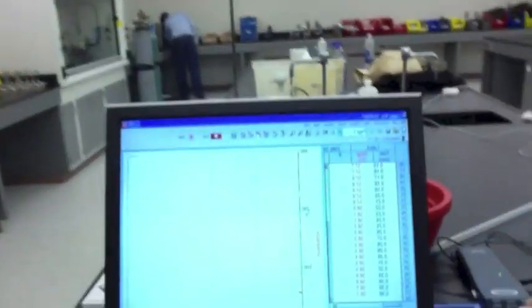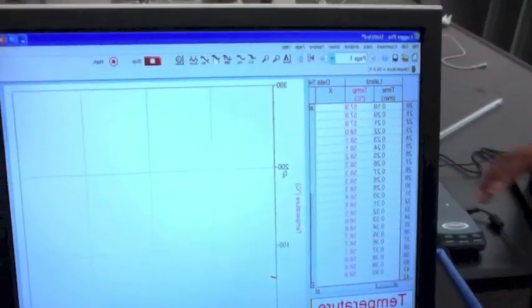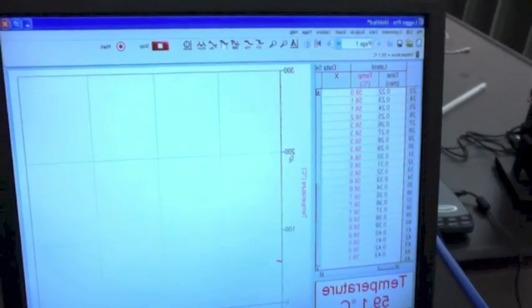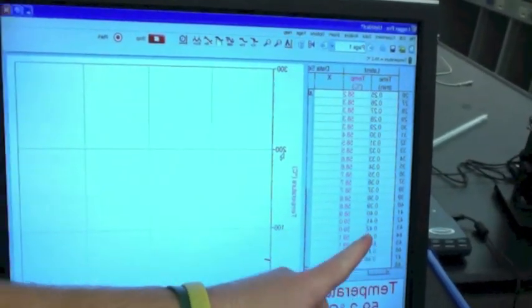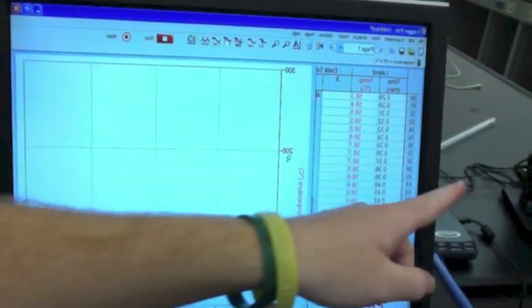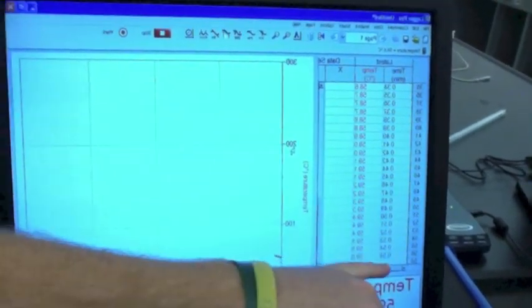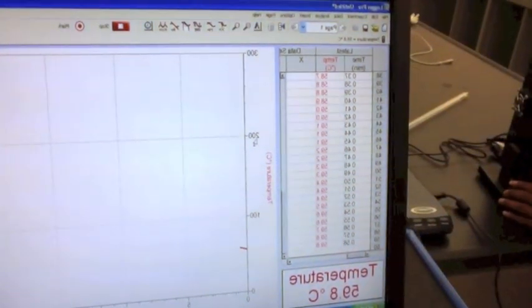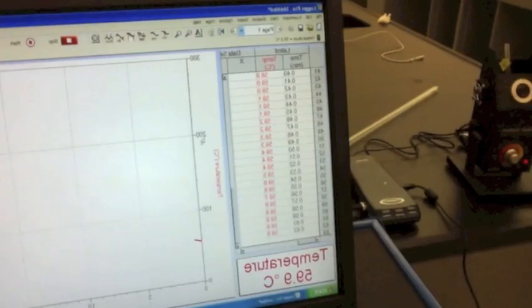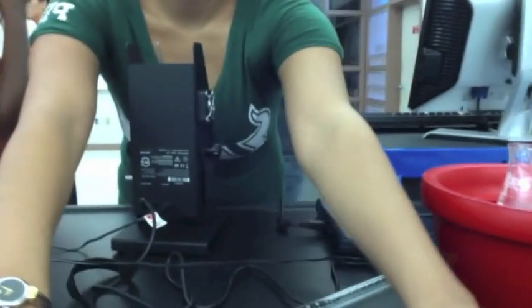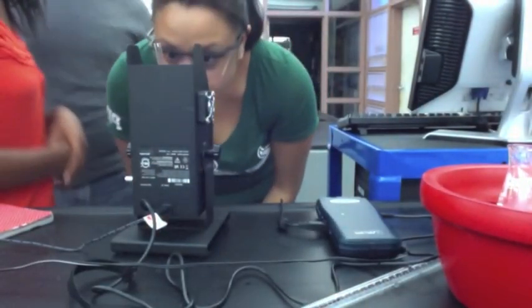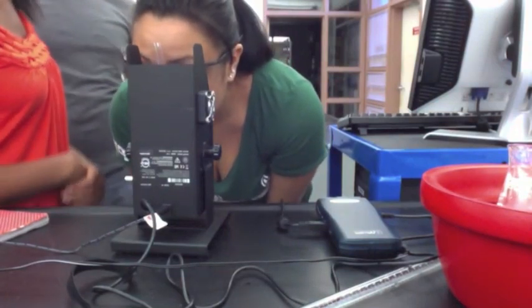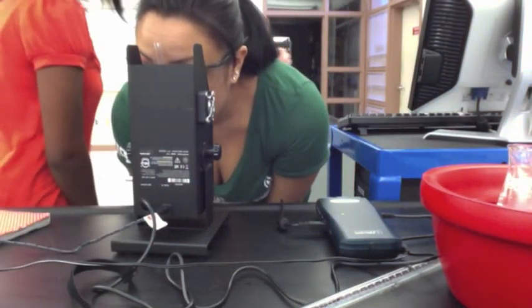On the screen, we're collecting the data of how and what temperature it melts at. It gives you at what time and then at what temperature, and you have to watch and see when it melts, and then this will give you the time and the temperature that it melted at. It's still crystallized right now. The textbook melting point for benzoic acid is at 120 degrees Celsius, and it's currently at 61.